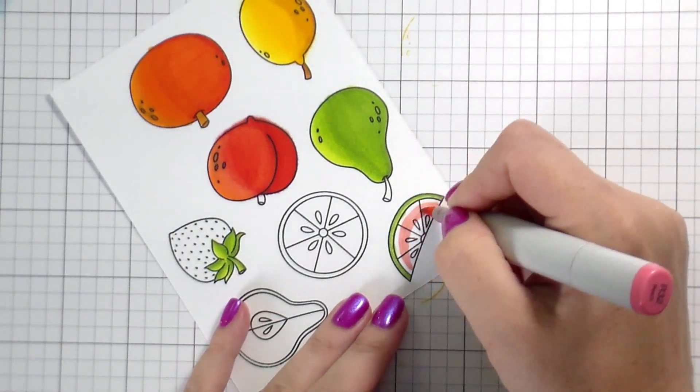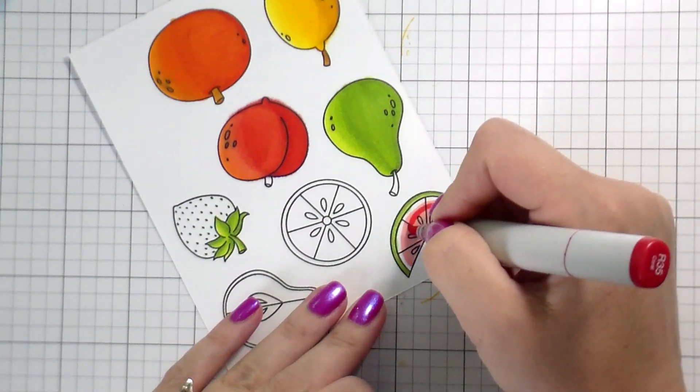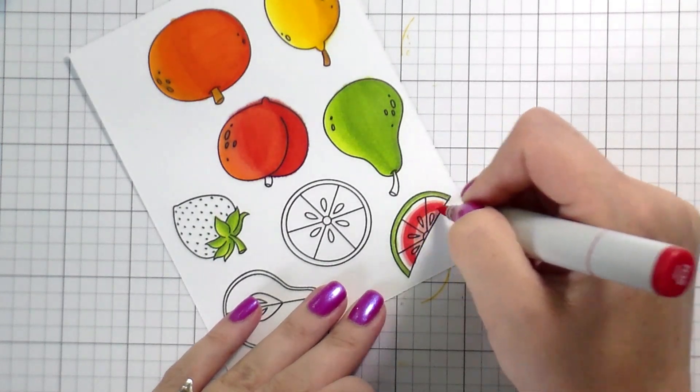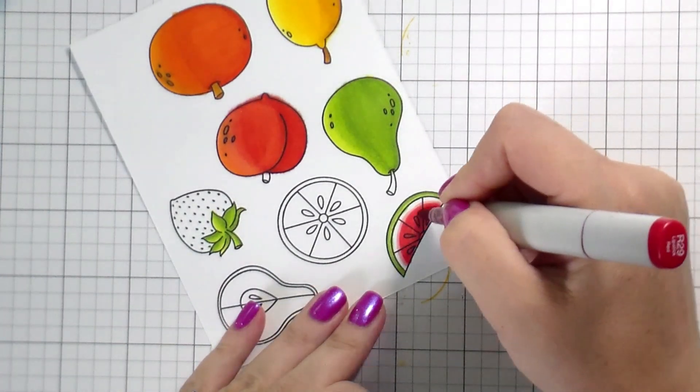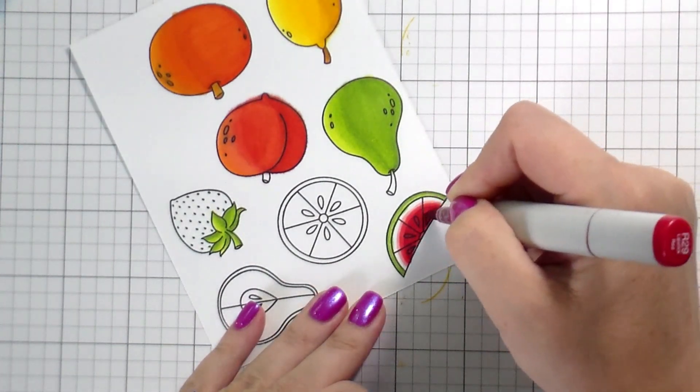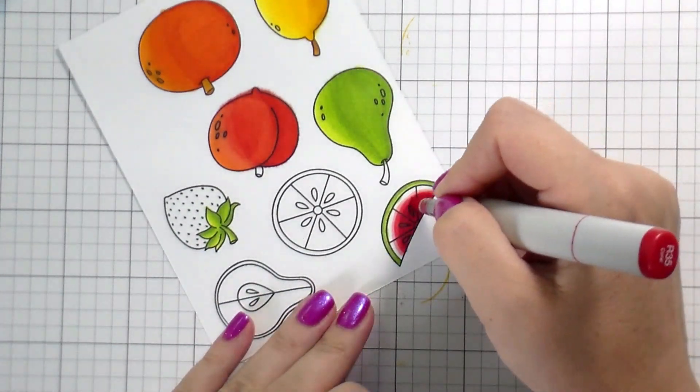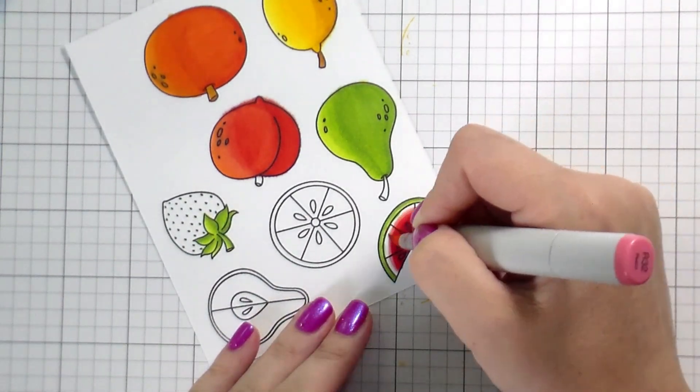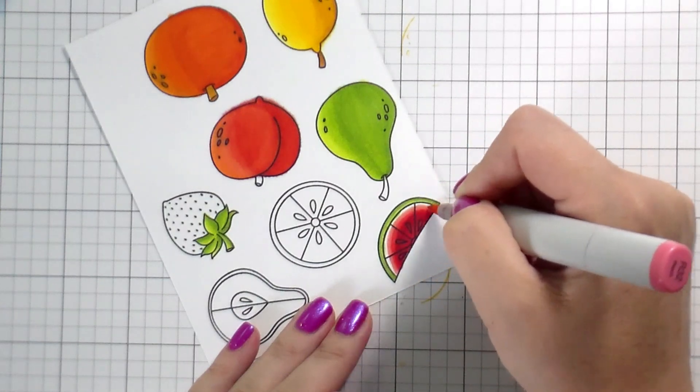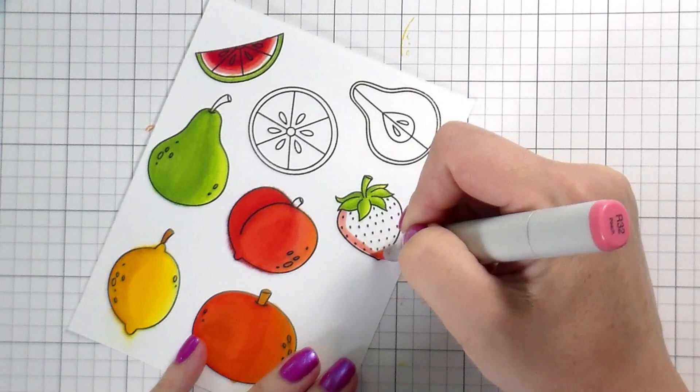For the watermelon, I'm going to use the same reds that I'm going to use for the strawberry, just a little bit differently. Instead of completely covering everything up, I am going to leave a band of white, and this is just to mimic the rind of the watermelon. I have another trick for this with the colorless blender, and we'll come back to that. Basically just reworking your darker colors with your lighter colors until you get a blend that you're happy with.